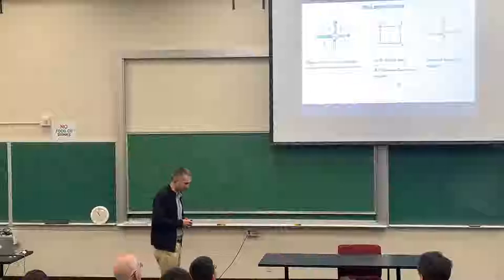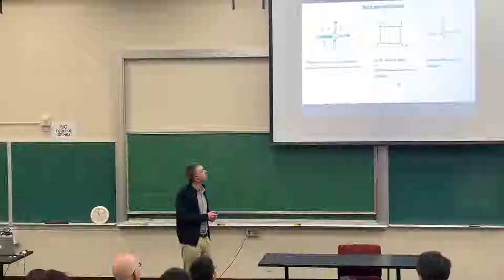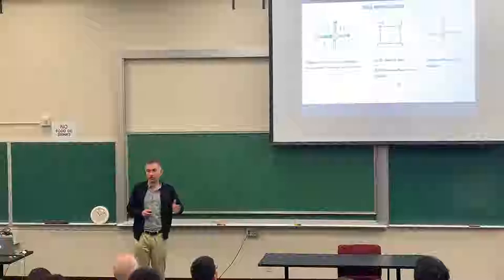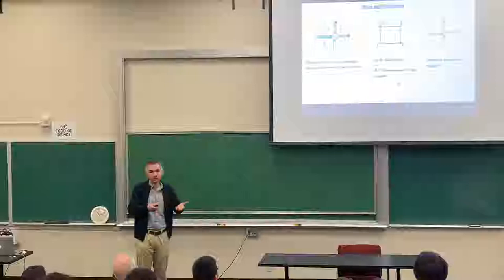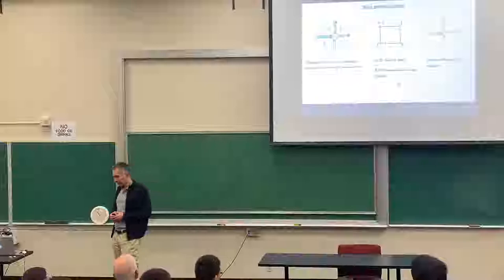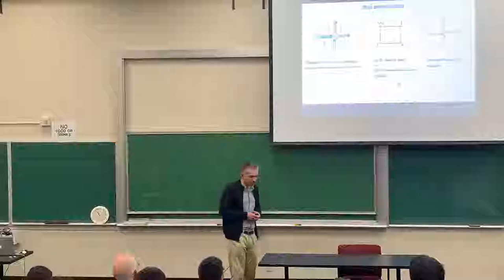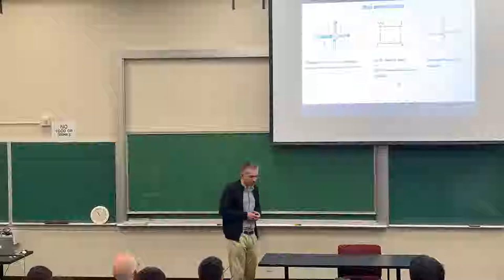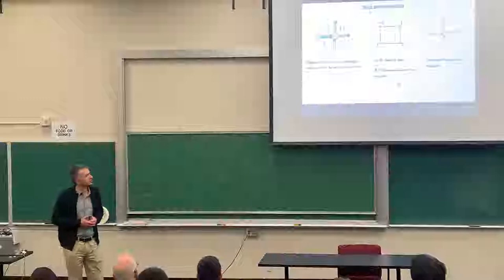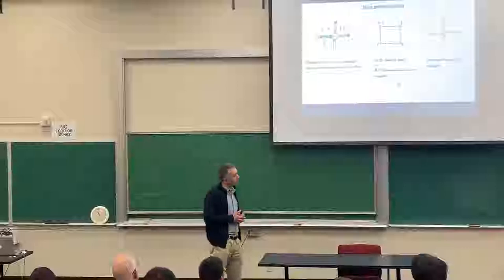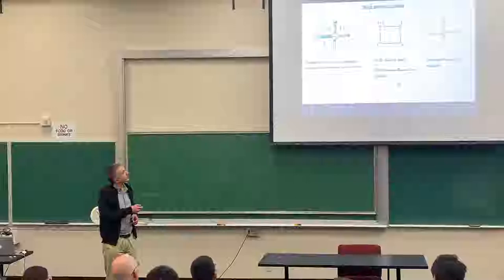The six-vertex model can be, and was, generalized in several directions. These are three pictures that show three different directions. The picture on the left corresponds to the situation when each edge can be occupied by more than one path. There are many paths traveling, and at each vertex, you can have many paths entering and leaving. So for any local configuration, you can assign a weight, and then we get a model. This is called the higher-spin vertex model.